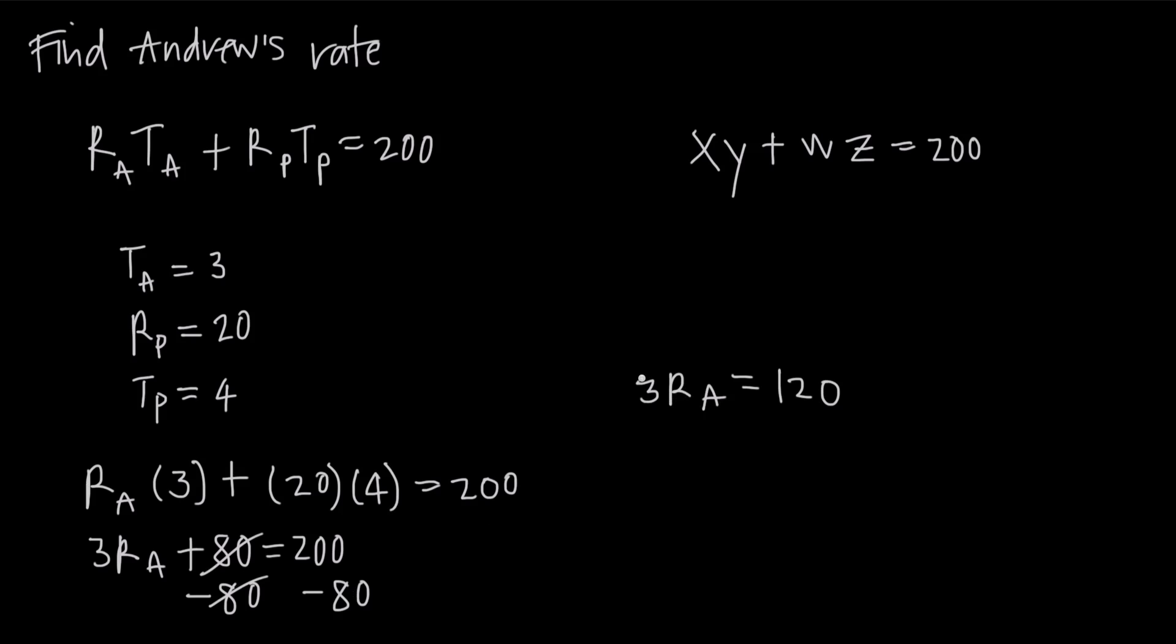Because we have r sub a multiplied by 3, we want to do the inverse operation and divide by 3. But we have to do that to both sides. We'll get 3 to cancel from the numerator and denominator on the left, leaving us with just r sub a. And on the right side, we get 120 divided by 3, which is 40. So we've found that Andrew's rate equals 40.